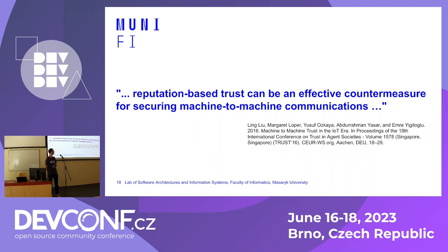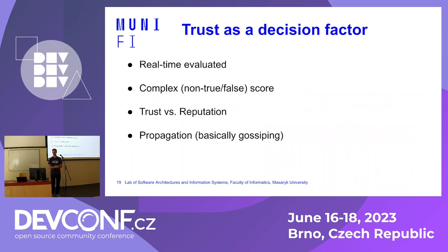Someone smarter than me said that reputation-based trust can be effective for securing communication. Our belief is that we can also use it for interactions — not just communication, but even physical interaction. Our idea is to use trust as a decision factor in real-time evaluation. We already know this trust will not be binary. In a simple binary true/false trust solution, you can have a lot of very dangerous false-positive situations, so a dual solution is definitely not something we want.